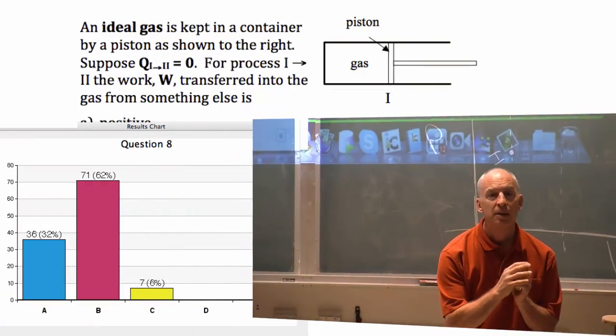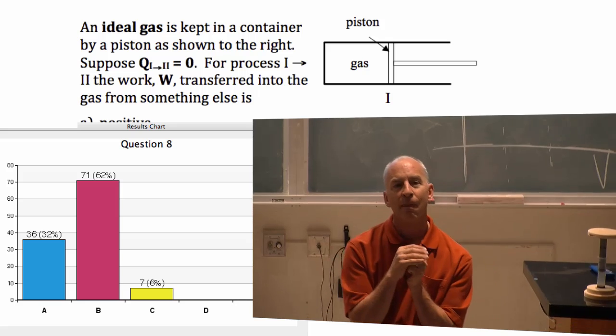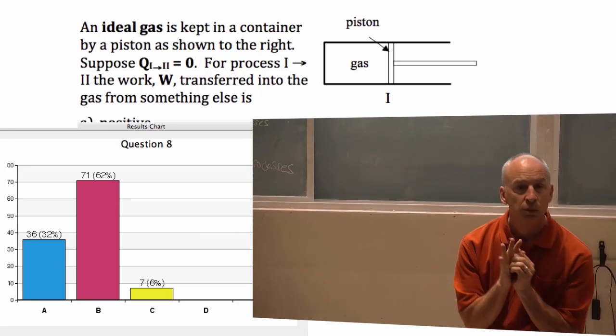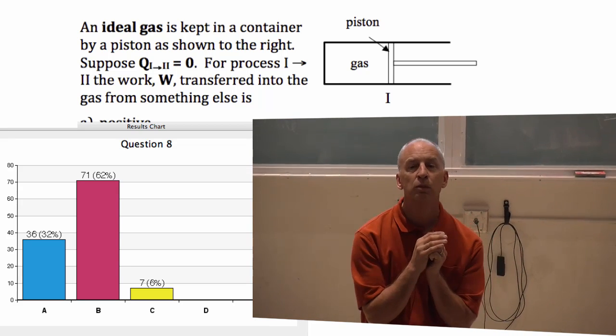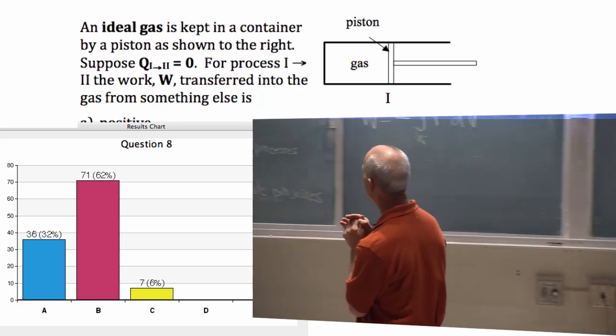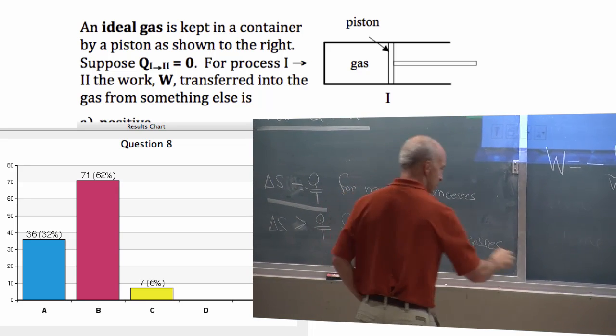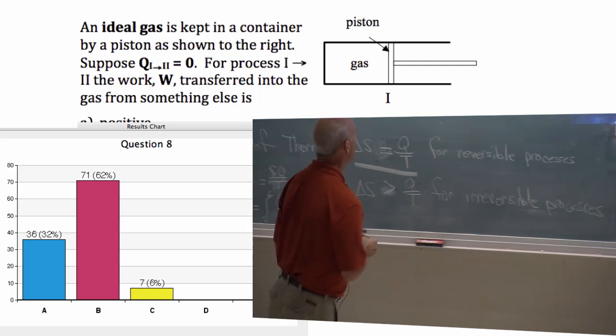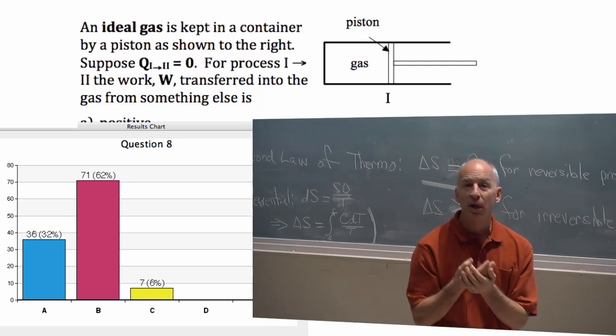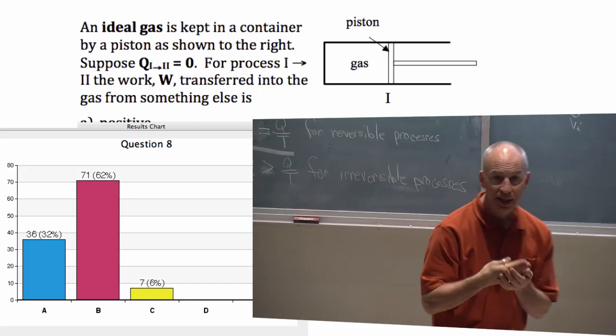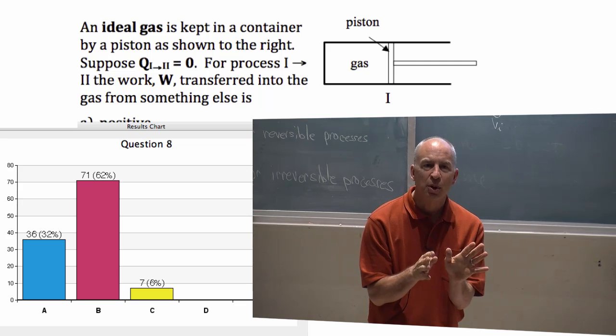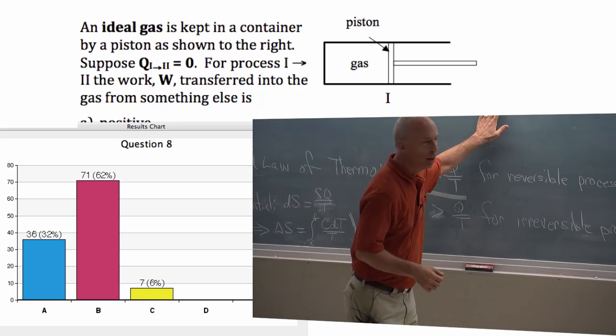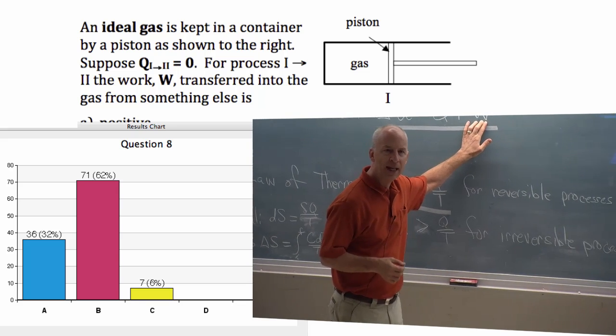Yeah? Can I just describe the word of the question? Because it says, the work transferred into the gas from something else. So, I'm thinking that the work is referred to from something else. So, it asks for the work energy transferred into the gas. Then, are you thinking W is negative? Is that the issue?